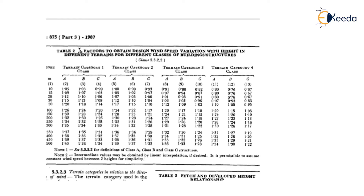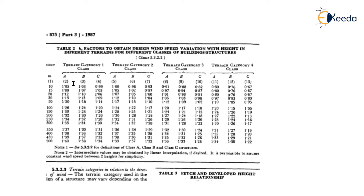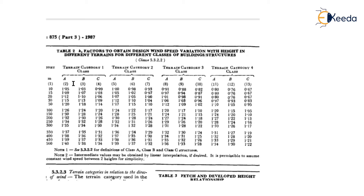From Table 2, the K2 factor is obtained based on height of structure, terrain category, and building class A, B, or C. Class depends on the size of your structure: if height is less than 20 meters it is Class A; if height is between 20 to 50 meters it is Class B; if height is more than 50 meters it is Class C.